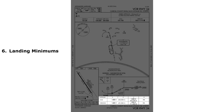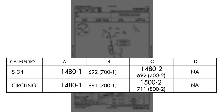The last section is the landing minimums section, containing the lowest altitude and visibility requirements for the approach. There are minimums for straight-in and for circling approaches. The minimums are the minimum descent altitude or decision altitude, and the visibility. Minimums are depicted for each aircraft category, which are based on approach speed — the faster you fly, the further right on the chart and the more restrictive the minimums. For this S-34 straight-in approach to runway 34, we have a minimum descent altitude of 1,480 feet — meaning if the cloud ceiling is below that, we won't see the runway.